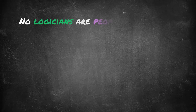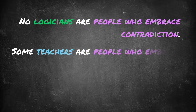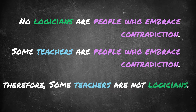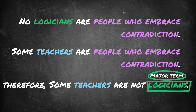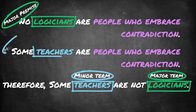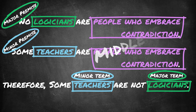Take a look at the syllogism again. Premise one: no logicians are people who embrace contradiction. Premise two: some teachers are people who embrace contradiction. Conclusion: therefore some teachers are not logicians. We start by looking at the conclusion — the predicate is our major term: logicians. So premise one is the major premise. The subject of the conclusion is our minor term: teachers, making premise two the minor premise. And people who embrace contradiction is the middle term.